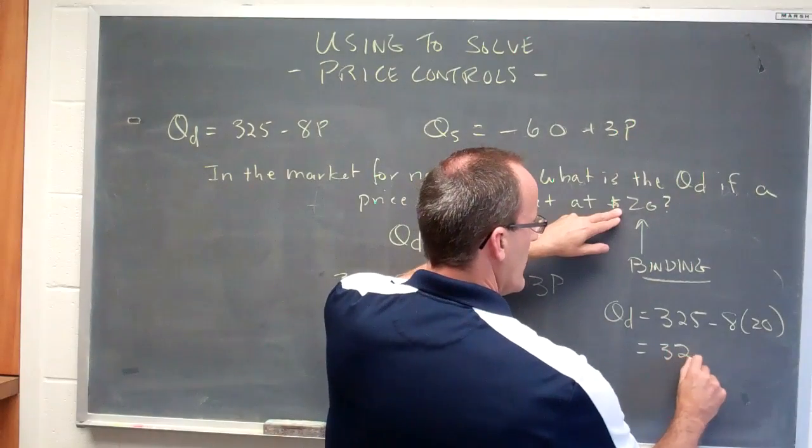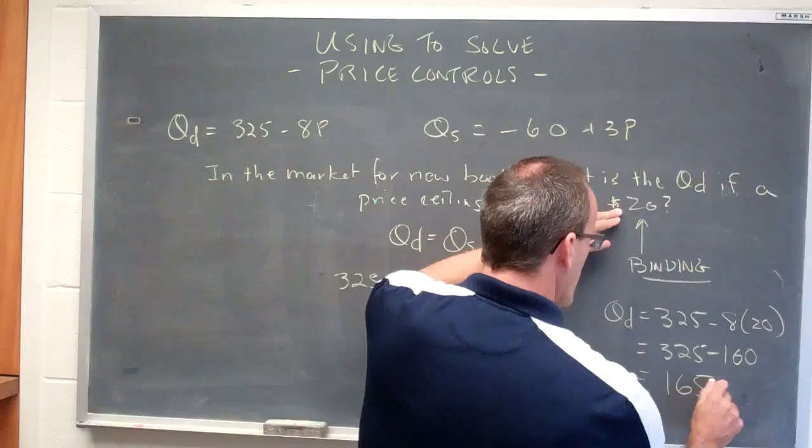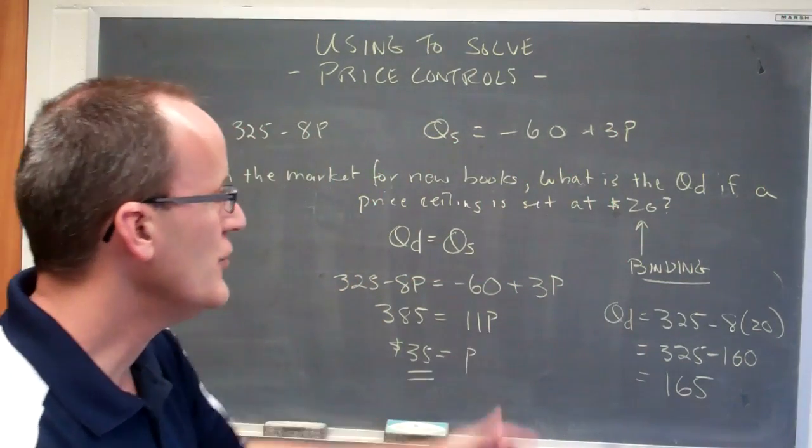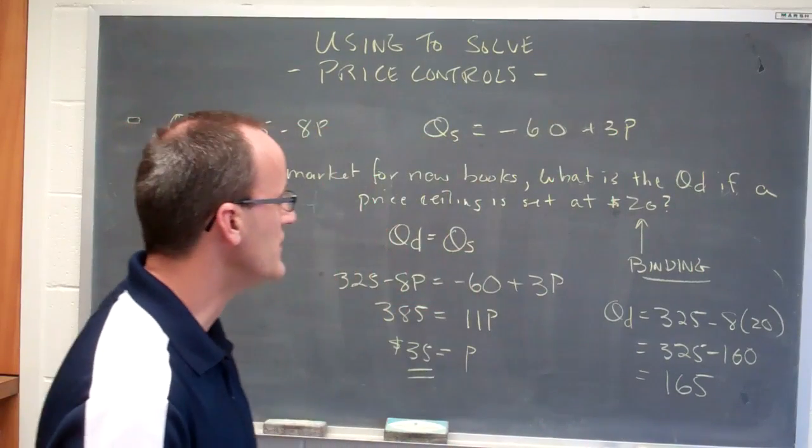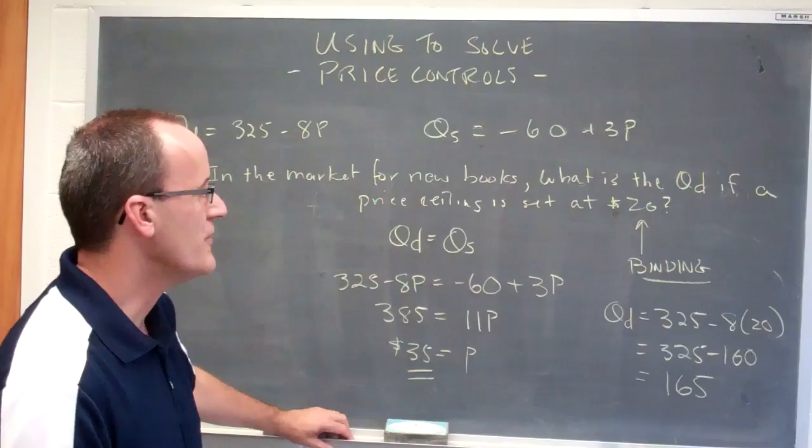Which is 325 minus 160, which would be 165 units. So in this particular case, consumers are going to want 165 units of the good because the price ceiling has been set artificially low.